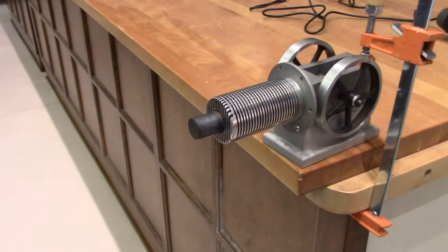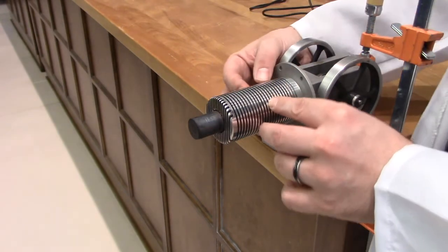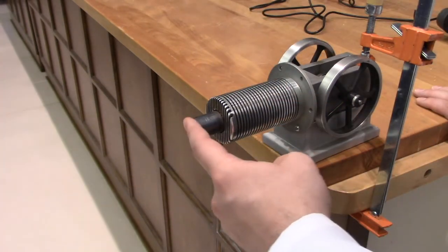Here we have that same sterling engine but with its piston on. Over here you can see a heat sink that keeps this side of the cylinder cool. We're going to manually heat this side to run this engine.